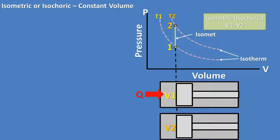we have a graph of the isometric process. On the y-axis, we plot the pressure in the piston chamber. On the x-axis, we plot the volume in the piston chamber.